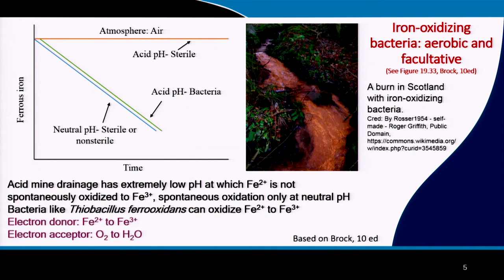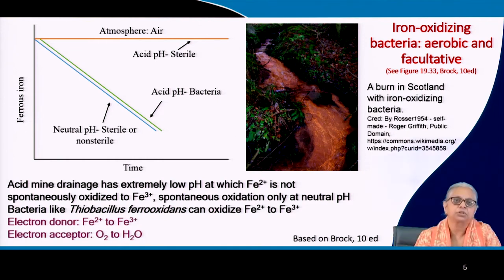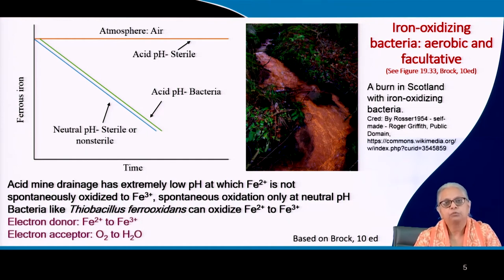We now come to another group of bacteria called iron oxidizing bacteria. These bacteria can be either aerobic or facultative — refer to the Brock text figure 19.33. What you see in this slide is acid mine drainage, which comes out of mining operations and tends to have extremely low pH, around 2 or even lower.